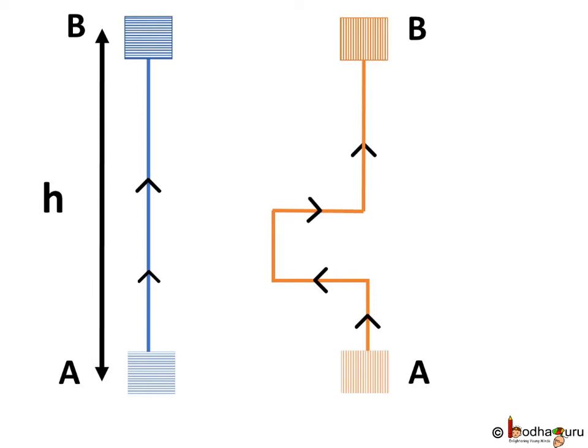So, here, we see a blue box and an orange box which are moved from position A to position B. And what do we see? They both require the same amount of work to be done when raised from position A to B by taking two different paths as shown by the arrow.